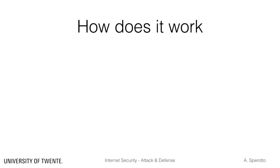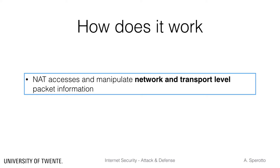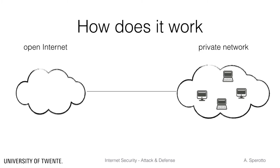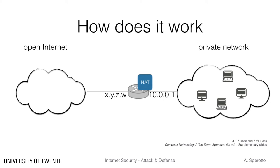A NAT works by accessing and manipulating both network and transport level packet information — therefore source and destination IP addresses and ports. Let's see how this is done. Let's assume we have a private network with a router implementing NAT. The addresses in the private network are in the network block 10. The router is reachable to the internal network with the IP address 10.0.0.1 and to the open Internet with a public address, say x.y.z.w. The overall idea is that all datagrams leaving the private network have the same source IP address, although they will have different source ports.